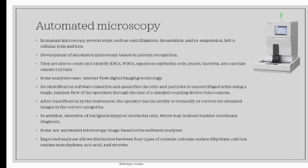Another method to detect RBC, WBC, squamous epithelial cell, yeast, bacteria, and crystal is automated microscopy. In manual microscopy, several steps such as centrifugation, decantation, and resuspension led to cellular lysis and loss. The pattern recognition-based development of automated microscopic system came to existence. Some analyzers use the laminar flow digital imaging technology, and some use the automated microscopy image-based urine sediment analysis. In laminar flow, identification software classifies and quantifies cells and particles in uncentrifuged urine using a single laminar flow of specimen through the lens of charge-coupling device video camera.